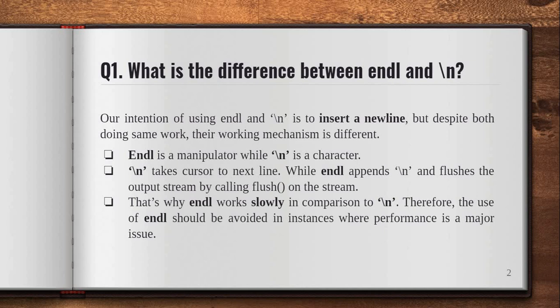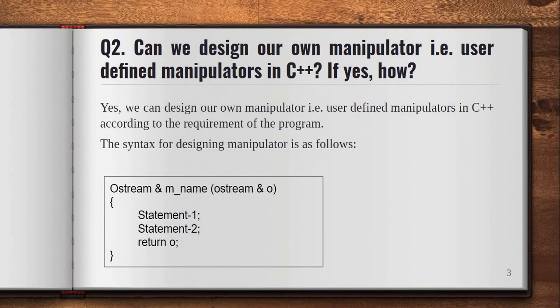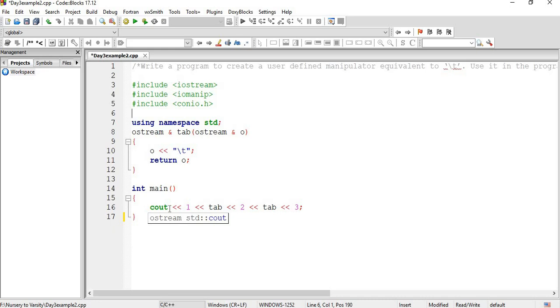Now let's see our second question: can we design our own manipulator, that is user-defined manipulators, in C++? If yes, how? Yes, we can design our own manipulator in C++ according to the requirement of the program. The syntax for designing a manipulator is as follows — mname is the name of the manipulator. So now let's make a user-defined manipulator.